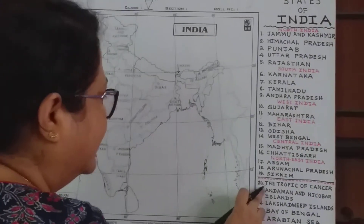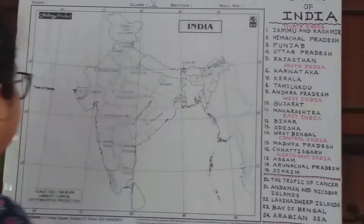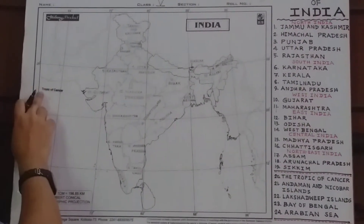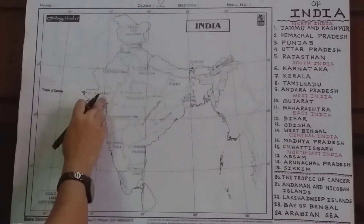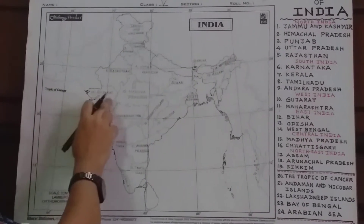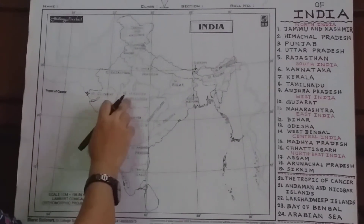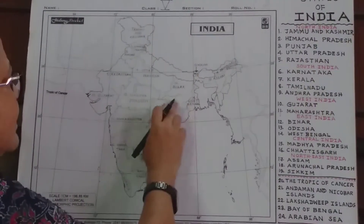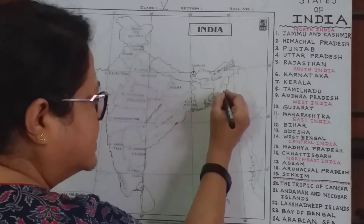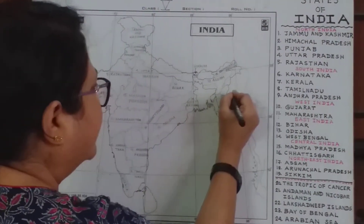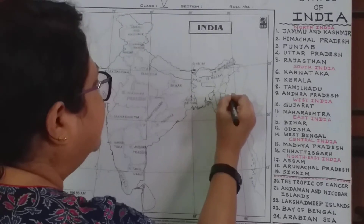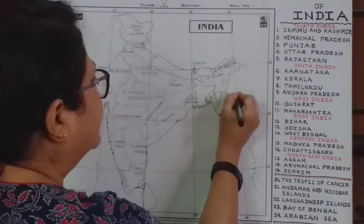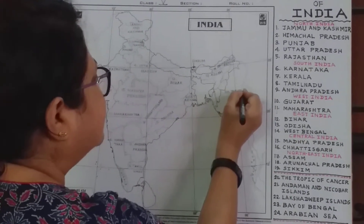Number 20 is Tropic of Cancer. You see this line passing just through Gujarat and Madhya Pradesh. This is the Tropic of Cancer, number 20.